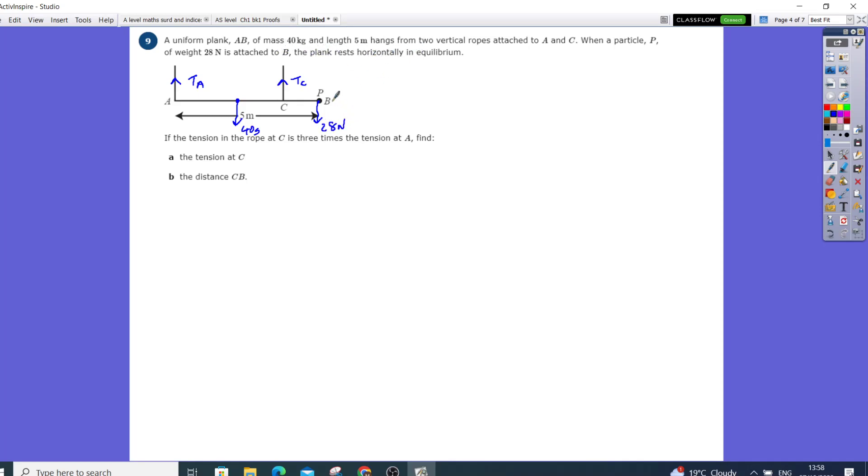The plank rests in equilibrium. If the tension in the rope C is three times the tension, so TC is going to be three times the tension at A, find the tension at C and the distance CB.